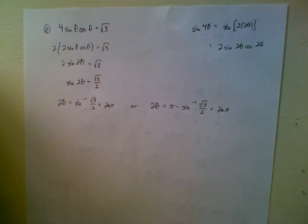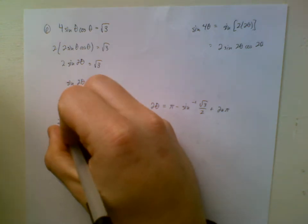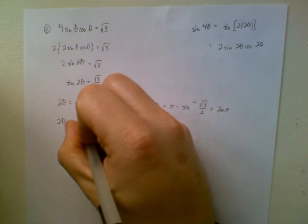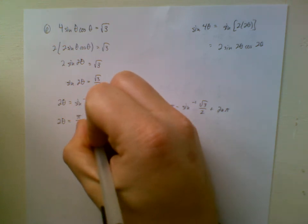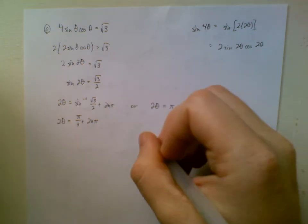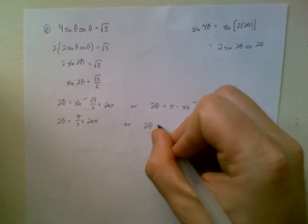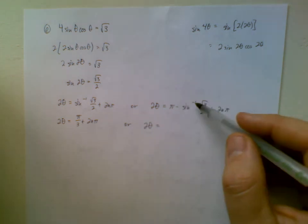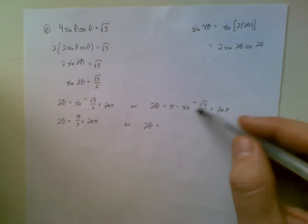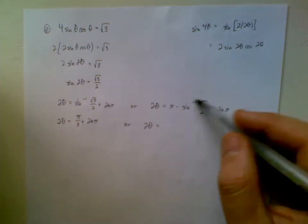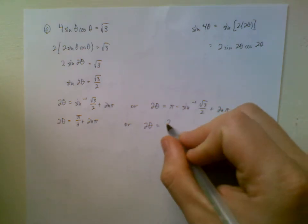Okay, what's sine inverse of root 3 over 2? I'm thinking it's going to be pi over 3, all right? Pi minus pi over 3. This is 3 pi over 3 minus 1 pi over 3, so that's 2 pi over 3.